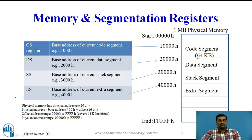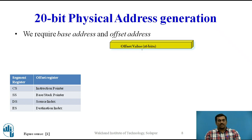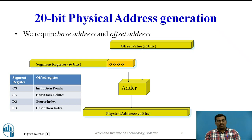The code segment register stores the base address of the current code segment — specifically the upper 4 digits of that base address. Similarly, the data segment register stores the upper 4 digits of the data segment base address, and so on. The 20-bit physical address is generated by adding the 16-bit offset value with the segment register value shifted left by 4 bits, using an adder to produce the 20-bit physical address.